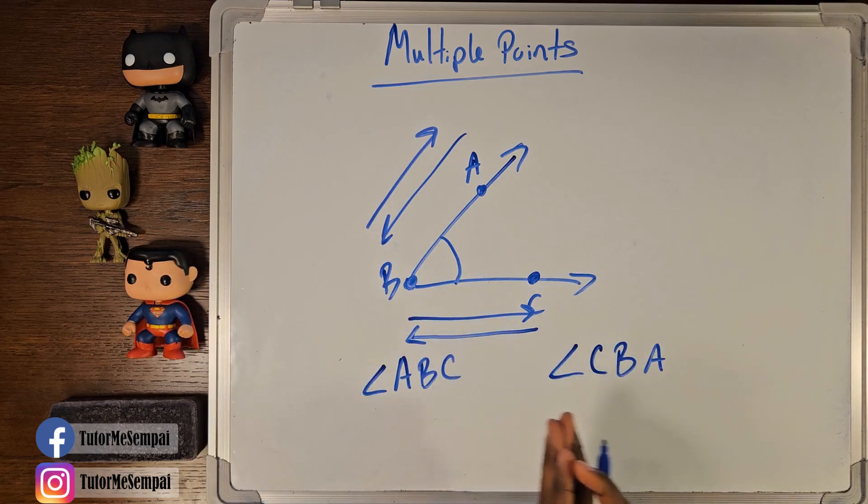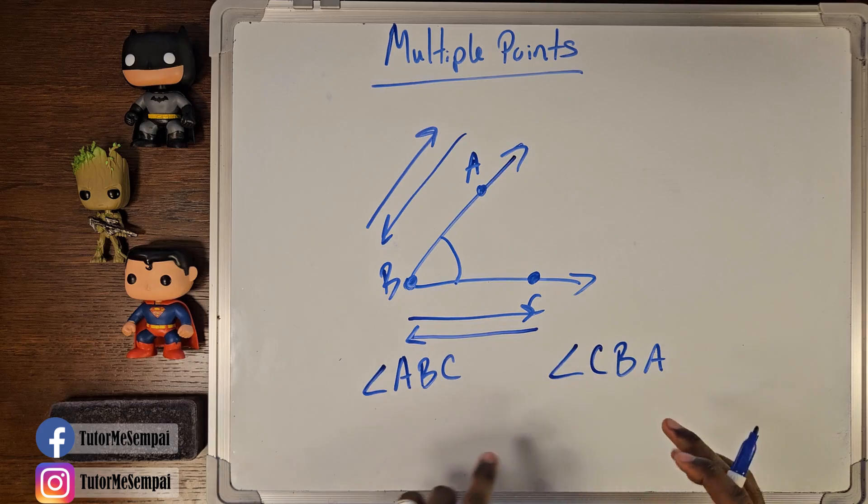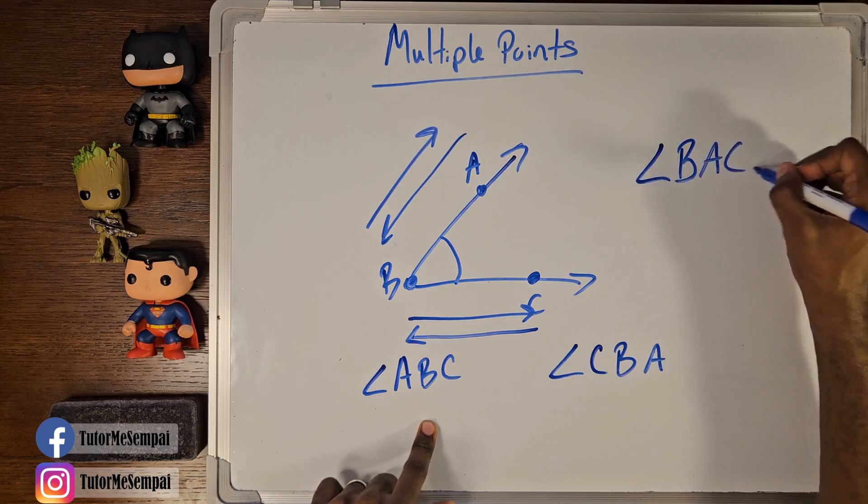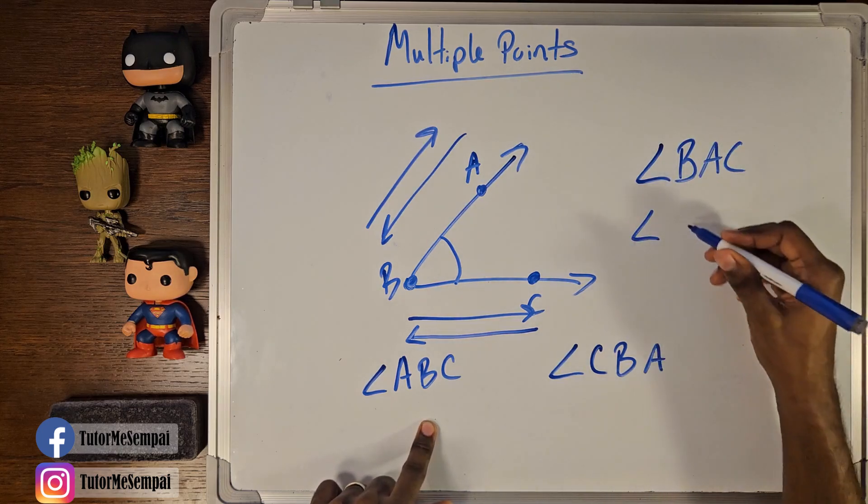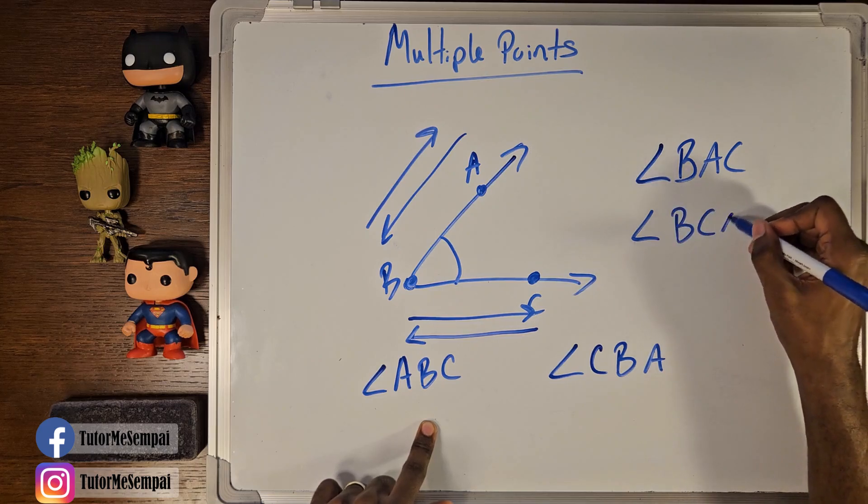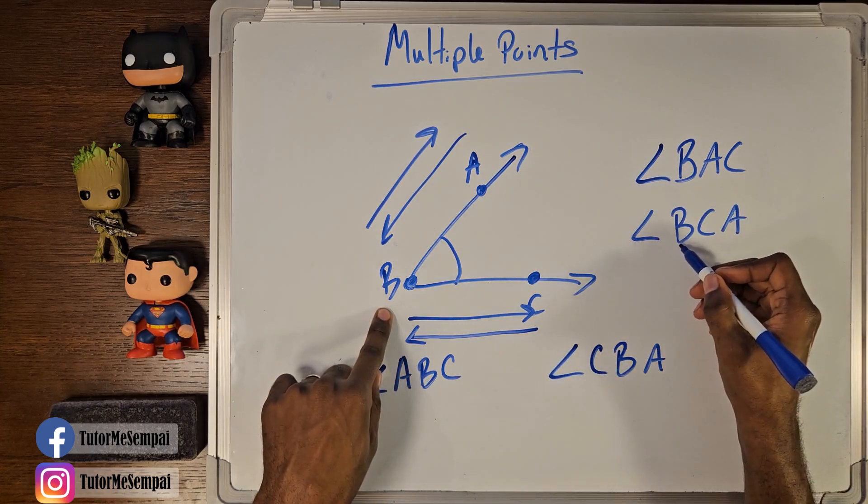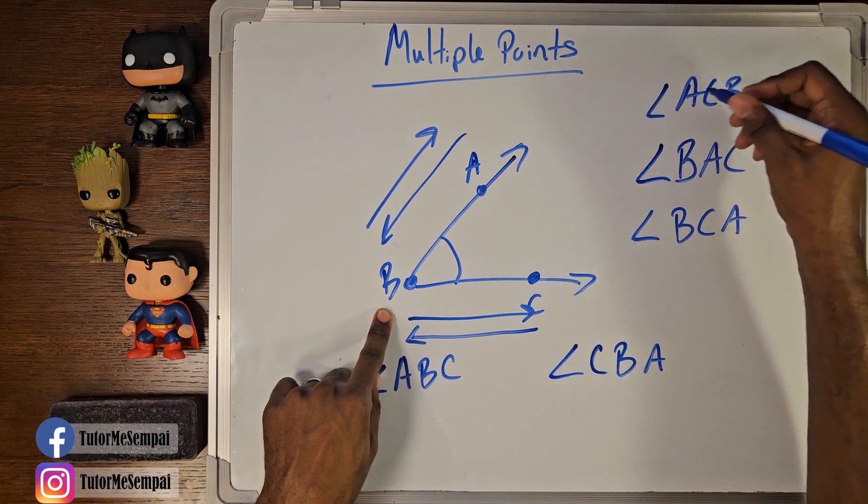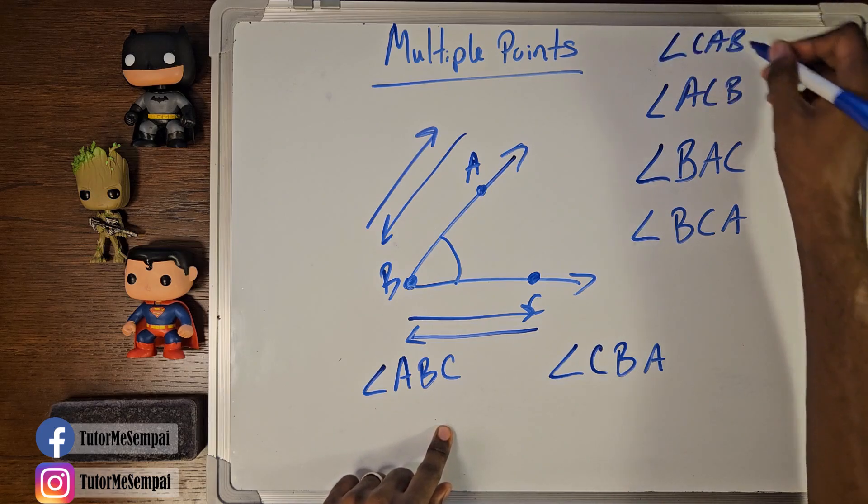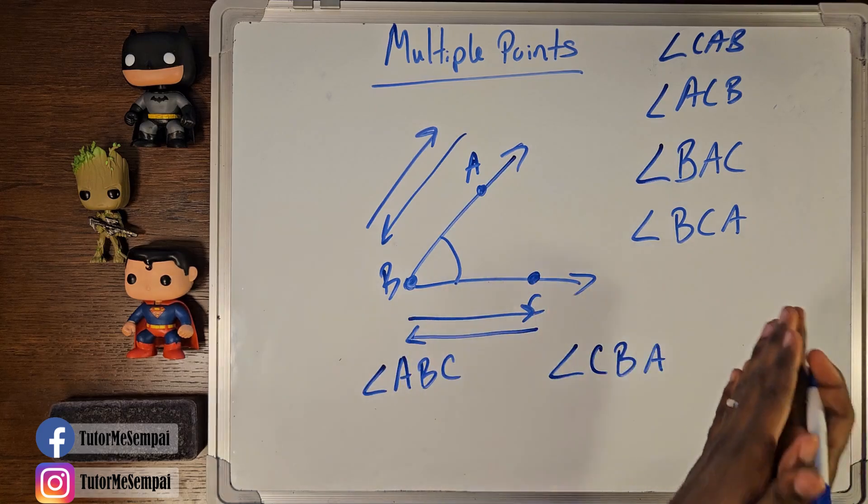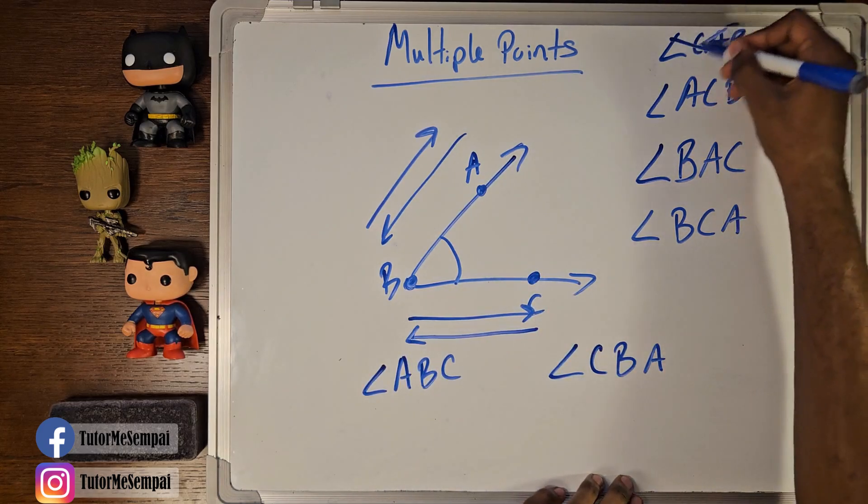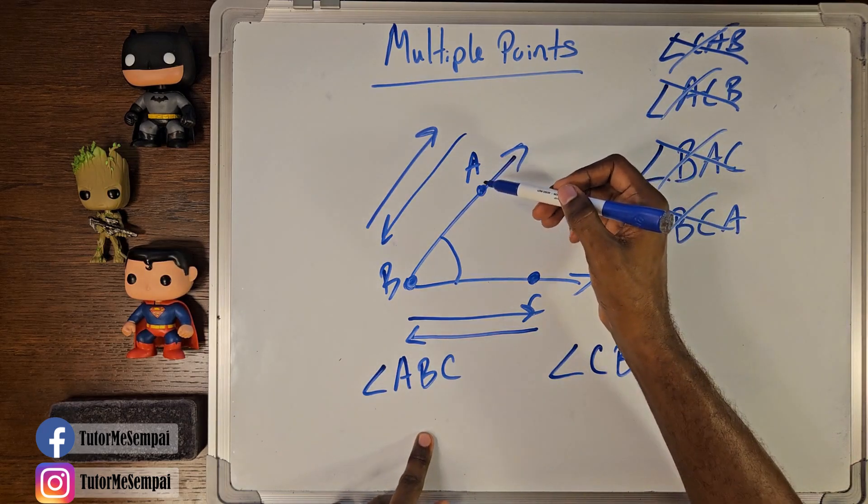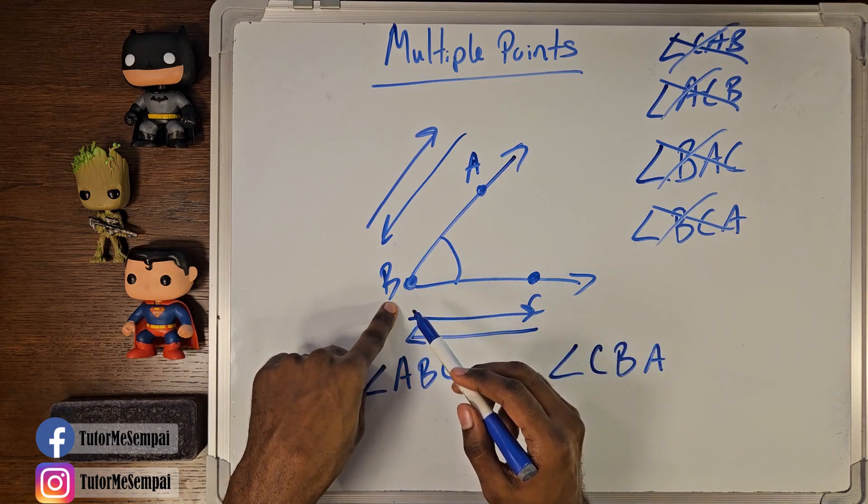But like I said, you can't just use any combination of these letters. This is not a proper way of naming this angle. You can't have angle B, A, C or angle B, C, A. Your vertex can never be your first letter. Likewise, you can't have A, C, B or angle C, A, B. Your B, your vertex, can't be the last letter in your angle name. All of these are wrong. You can't do that.